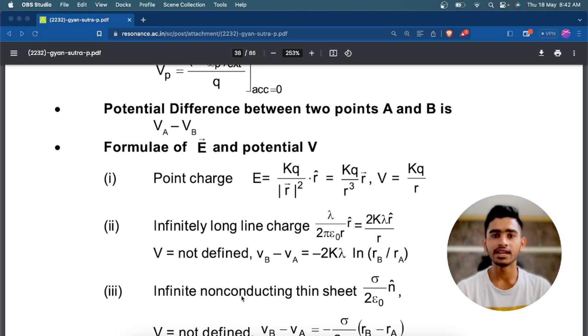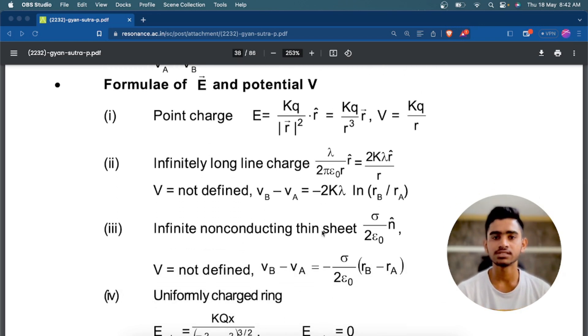There are around three to four questions which play around this relation—what is directly proportional to what. Suppose if there is an electric field and the expression for electric field is Kq by r square, the question will be in such a way that if radius is doubled, if radius is halved, if radius is squared, then how will it affect the electric field.